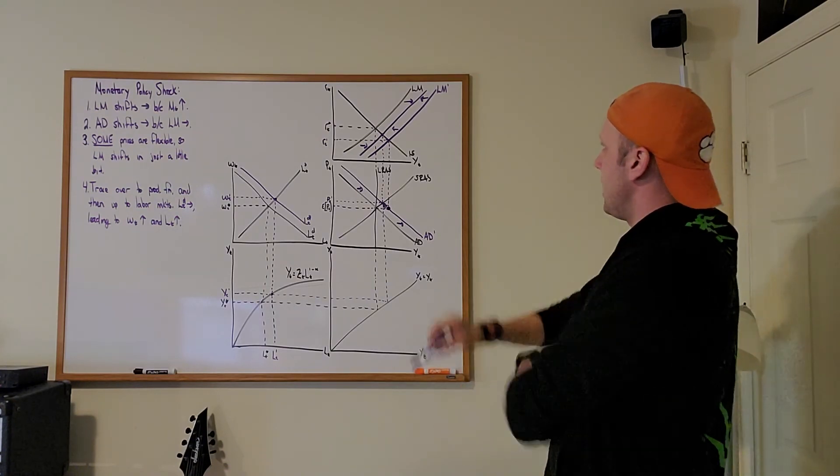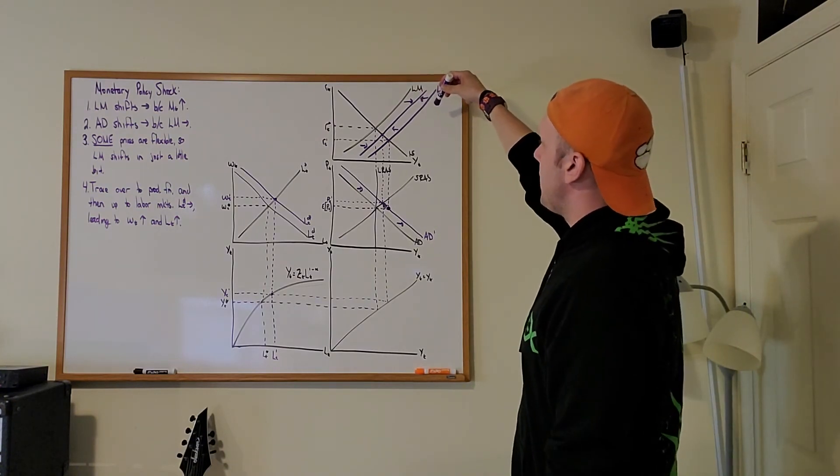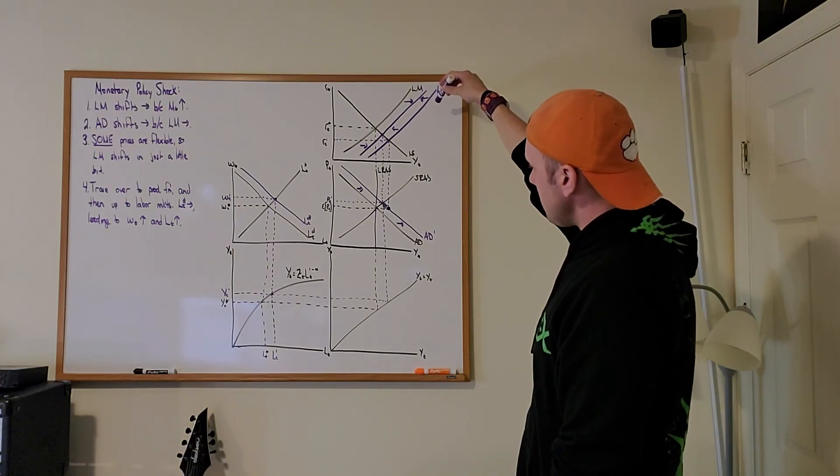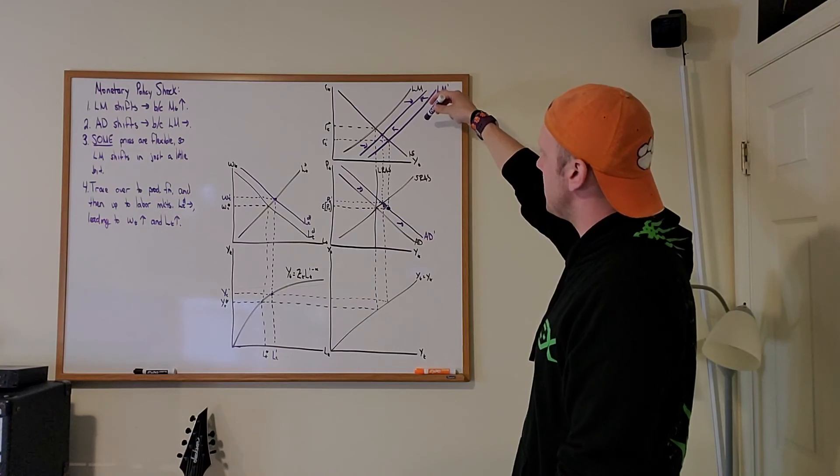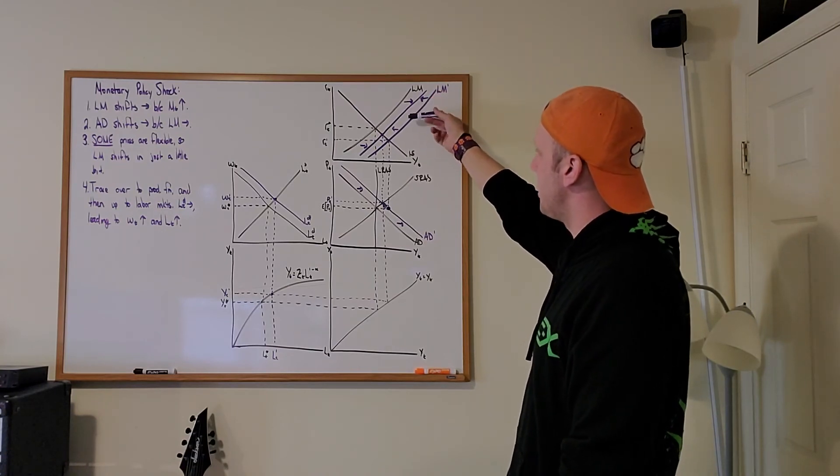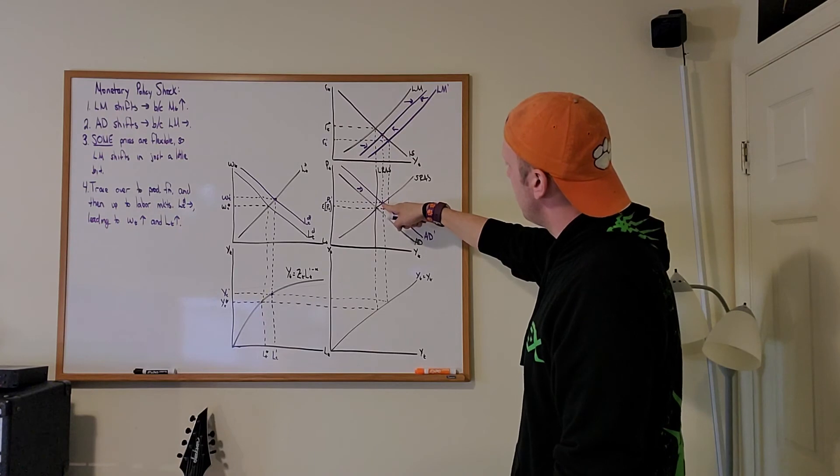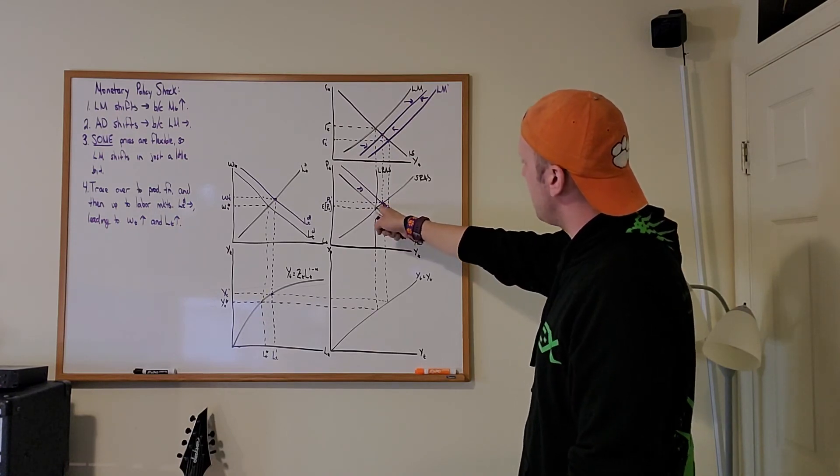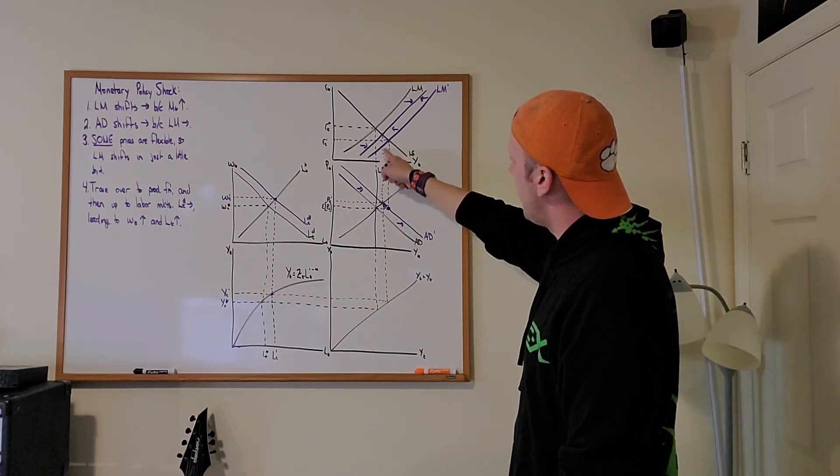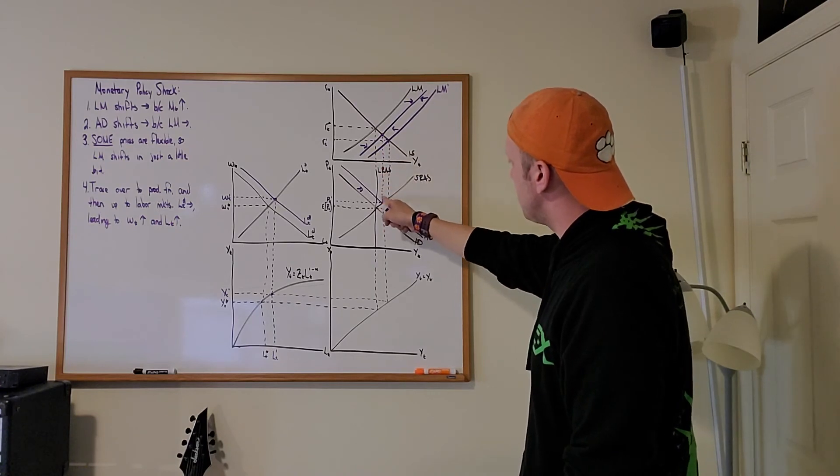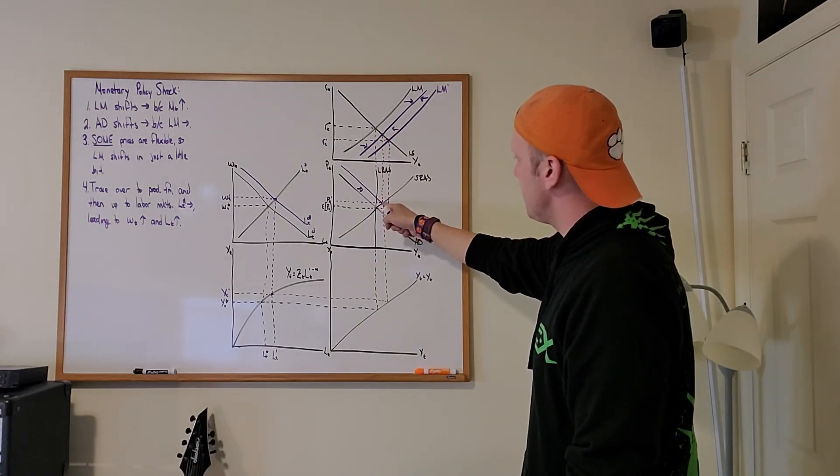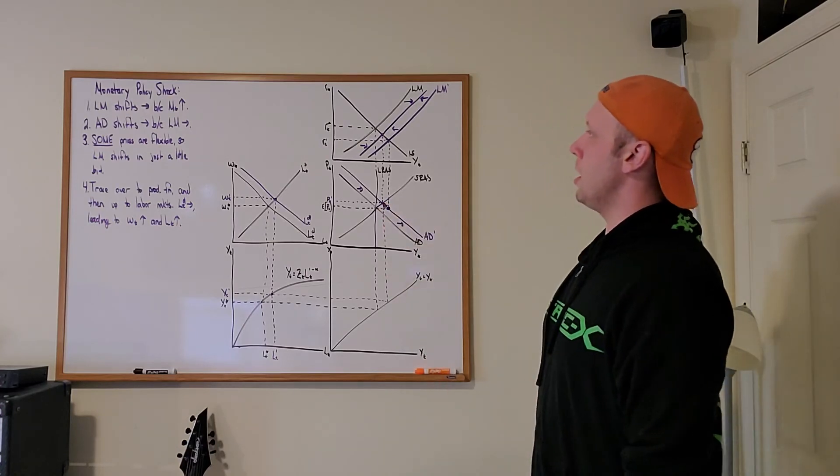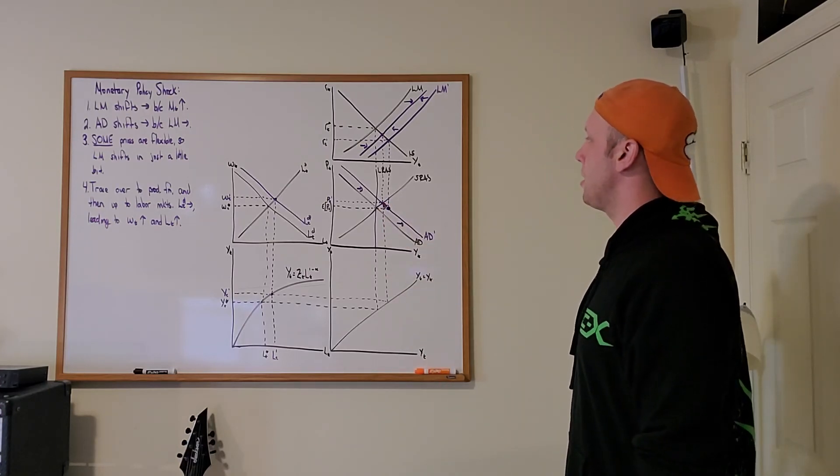So this is the short-run equilibrium within this model. So what happened is the LM curve shifts out because the central bank decided to print more money. Now, some prices can change, not all of them. So because some prices can change, the LM curve is going to shift in to a point that is directly above where aggregate demand and short-run aggregate supply intersect. You can see if you just trace this dotted line up, you'll get that. So this is our short-run equilibrium following a monetary policy shock.